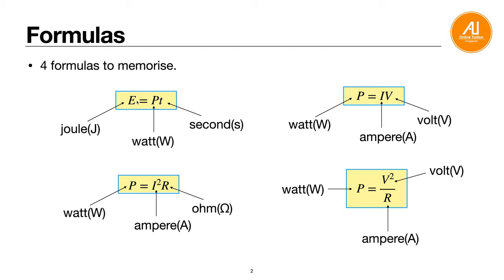The first formula is E equals Pt, where E is energy in joules, P is power in watts, and T is time in seconds. The other three formulas are: P equals IV, P equals I squared R, and P equals V squared over R.